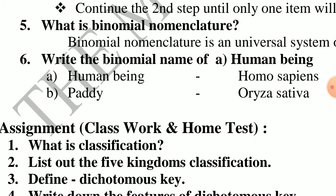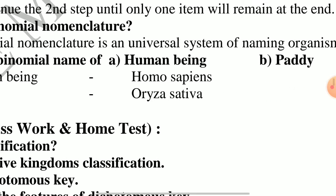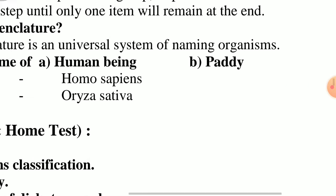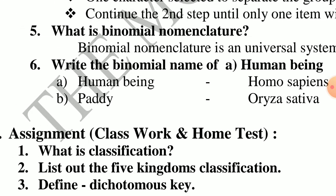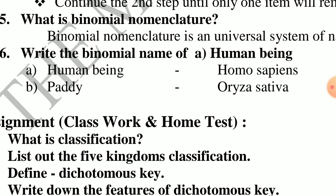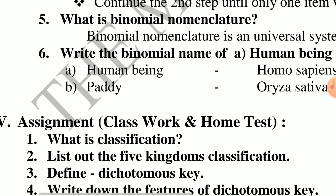Fifth question: what is binomial nomenclature? Binomial nomenclature is a universal system of naming organisms. Write the binomial name of human beings and paddy. Human beings: Homo sapiens. Paddy: Oryza sativa.